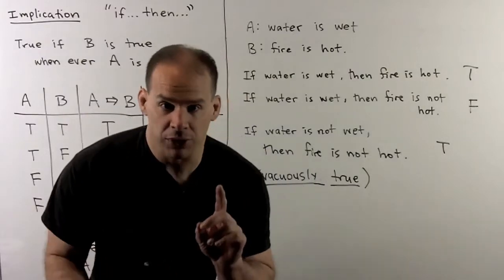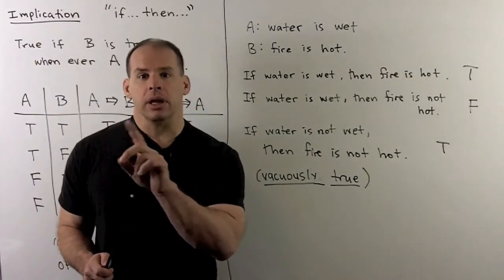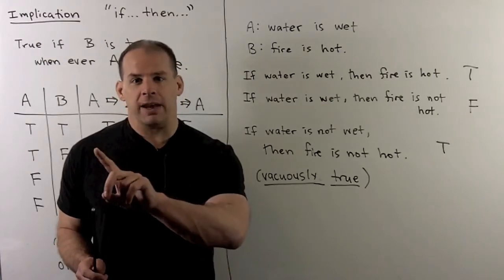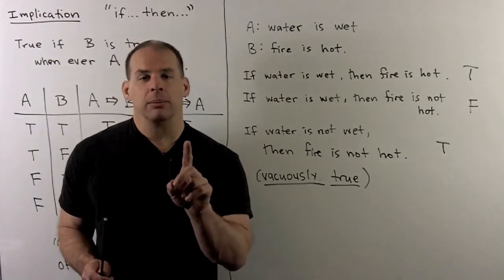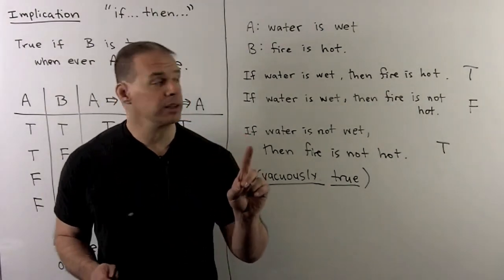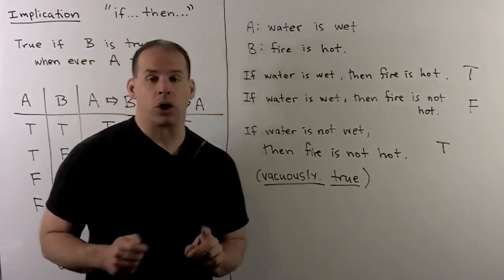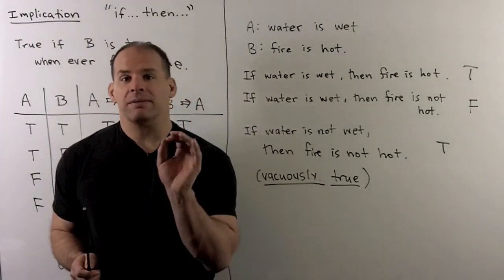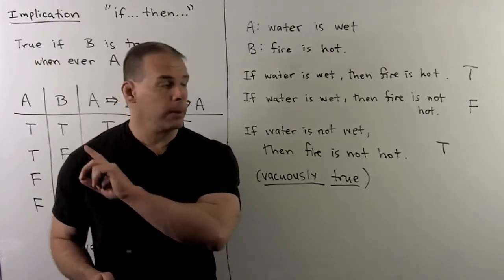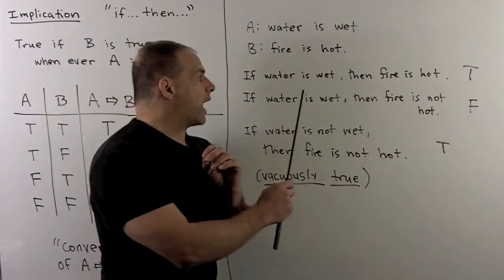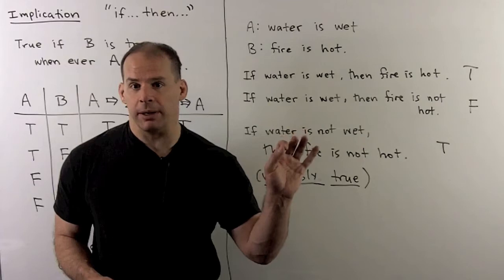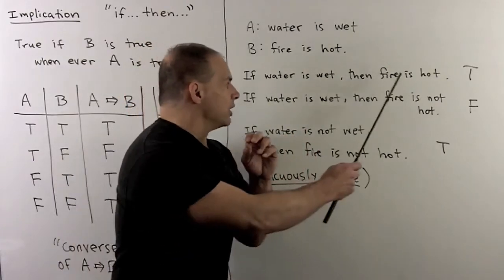One other special thing to note about implication, we usually think of if-then as being cause and effect. But here, we really don't need to have a cause leading to an effect. So, for instance, if I have the statements, A as water is wet, B as fire is hot, we can just check things out in our truth table as before. So, for instance, if water is wet, then fire is hot, both of those are true. So, we have a true statement. And note, there's no real cause and effect here.